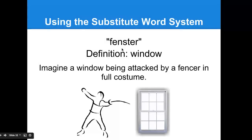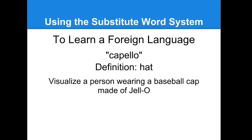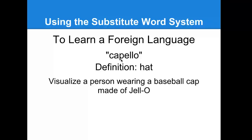In Italian, 'capello' means hat. You can visualize a person wearing a baseball cap made out of jello. I tried to find a visual for this on Google but couldn't, though I thought it would be fun — a person wearing a baseball cap made out of jello. Capello means hat. We took 'cap' and then 'elo,' which sounds like 'jello,' and that's how we came up with a person wearing a hat made out of jello. The crazier and more bizarre, the better these things are going to work for you.